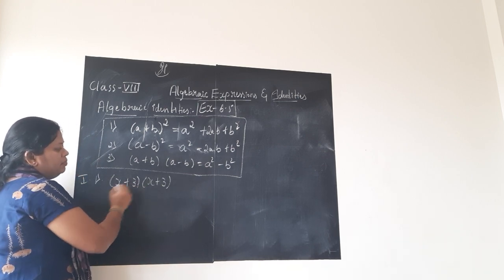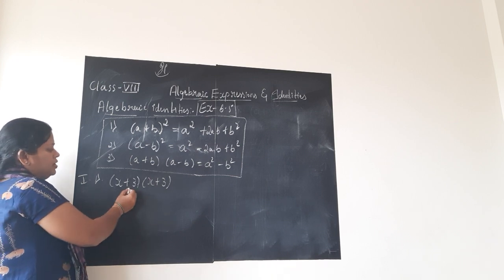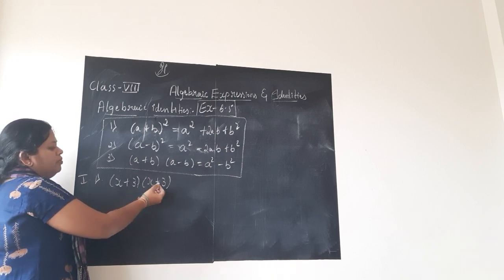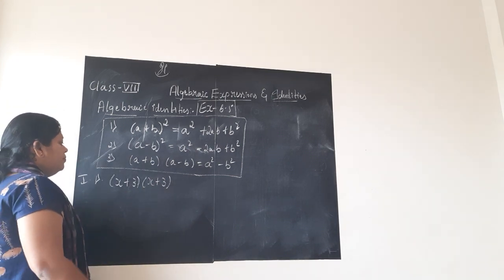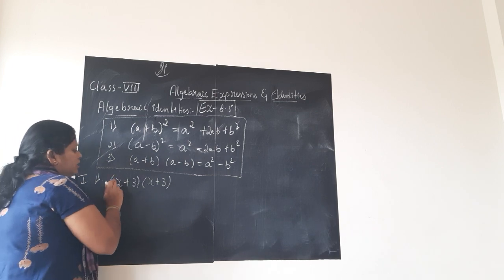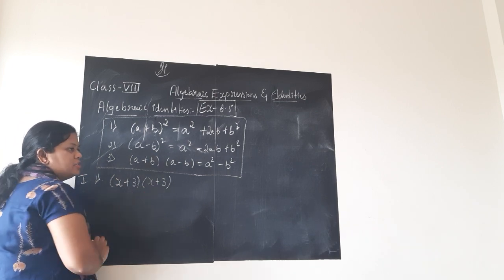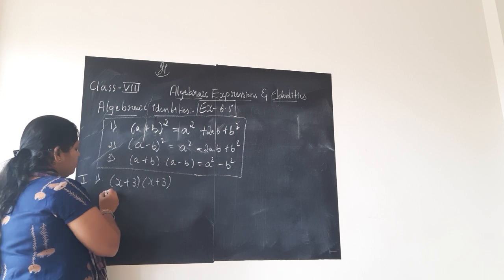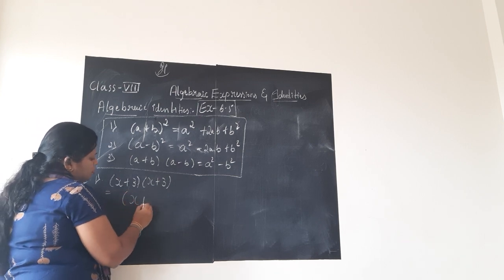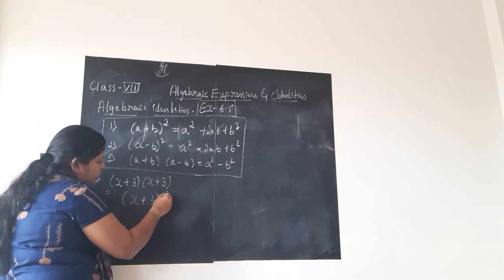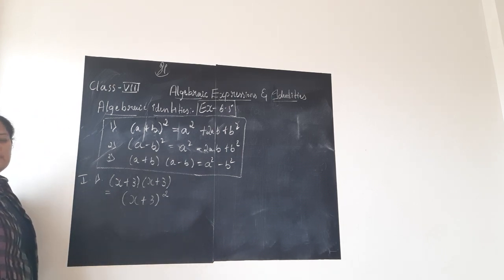Here we have multiplication of two binomials. x plus 3 is one binomial, x plus 3 is another binomial. Instead of expanding it step by step, x plus 3 into x plus 3 can directly be written as x plus 3 whole square.